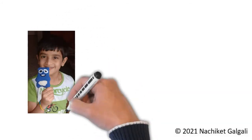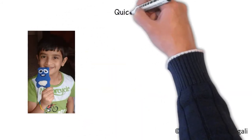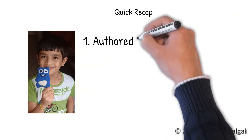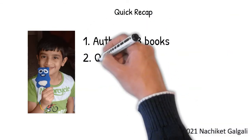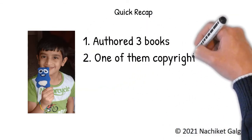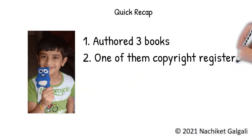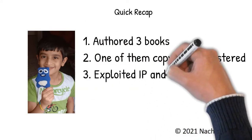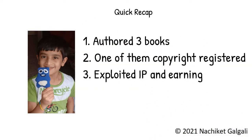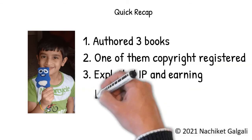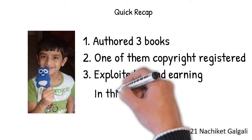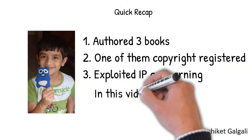Welcome back. In the earlier video, we saw a case study related to copyright. Vardendra authored about three books. Among three, at this point in time, he got copyright registered for his first book. He allowed his work to be published on Amazon Kindle and started receiving royalties. Now that we have covered copyright and case study, in this video, let us look at how plant varieties are protected.